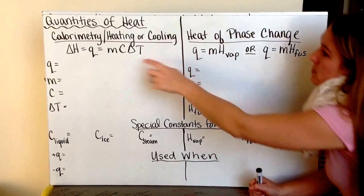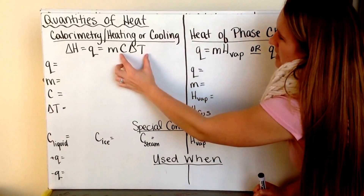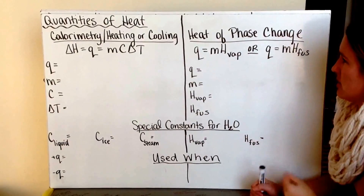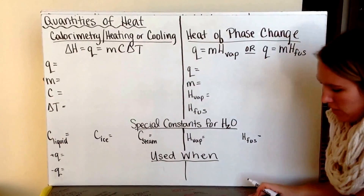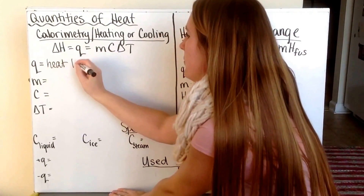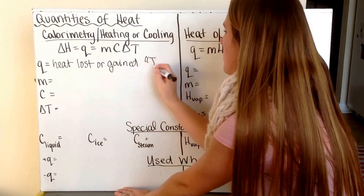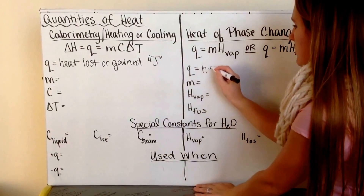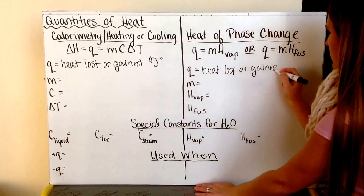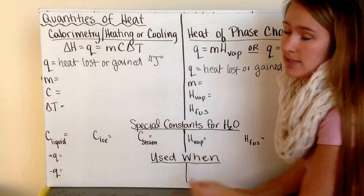For both equations Q is the same and M is the same — Q is the heat lost or gained, measured in joules, and M is the mass in grams. The differences come in the remaining variables: specific heat times change of temperature for calorimetry, versus H_vap and H_fusion for phase changes.